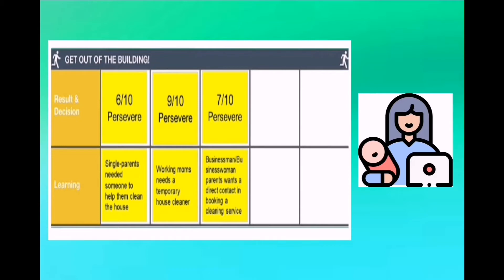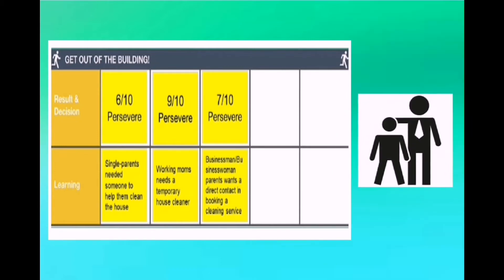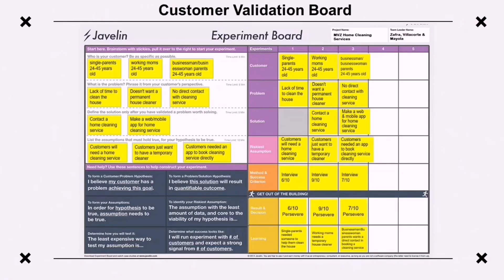For the last customer, businessman or businesswoman parents, the result is 7 out of 10 — persevere and valid. The learning is that businessman or businesswoman parents want direct contact when booking a cleaning service. That concludes our customer validation board of the Javelin Board.